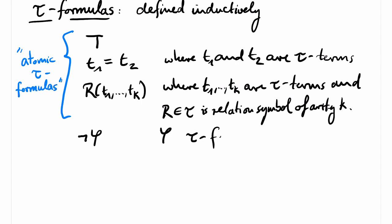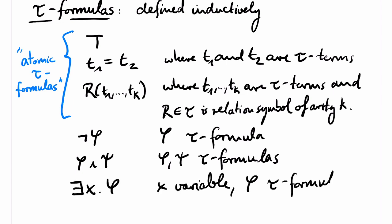Next, if phi is a tau formula, then not phi is a tau formula. If phi and psi are tau formulas, then phi and psi is a tau formula. These two lines you also recognize from propositional logic. Finally, the next line presents something completely new. If x is a variable and phi is a tau formula, then exists x, phi is a tau formula.